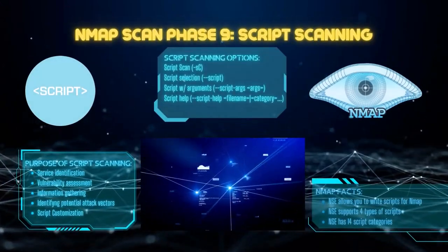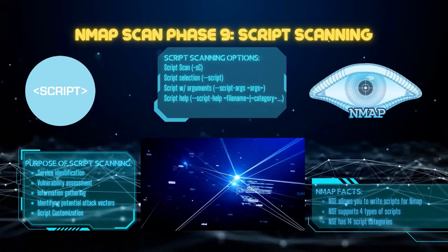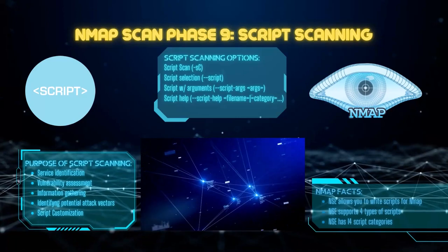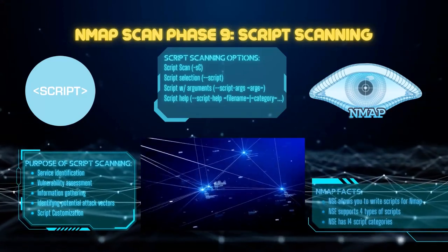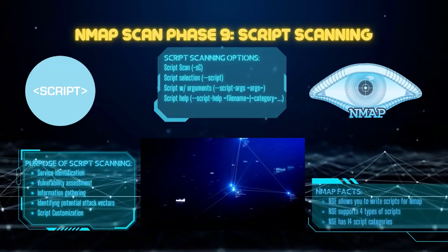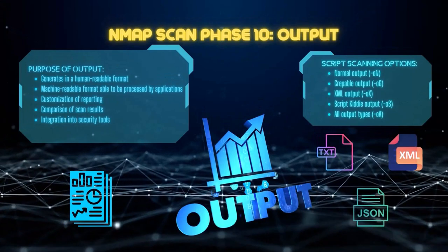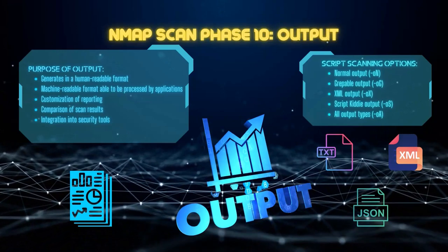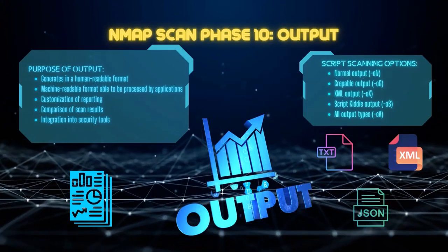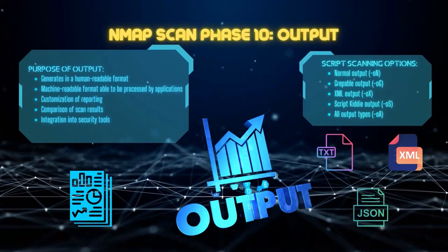Phase nine is script scanning, one of the most powerful features of Nmap. Most NSE scripts are executed during this phase, powered by the Lua programming language and a standard library designed for network information gathering. These scripts run for each target host and port, performing tasks such as detecting service vulnerabilities, malware discovery, collecting information from databases, and advanced version detection. This phase is not executed by default and requires the --script or -sC option. Phase ten is output. After completing all scanning phases, Nmap compiles gathered information and presents it in a readable format, ranging from a default human-readable format to machine-readable output like XML, JSON, or grepable format. By default, Nmap outputs results to the command line, but results can be redirected to a file.